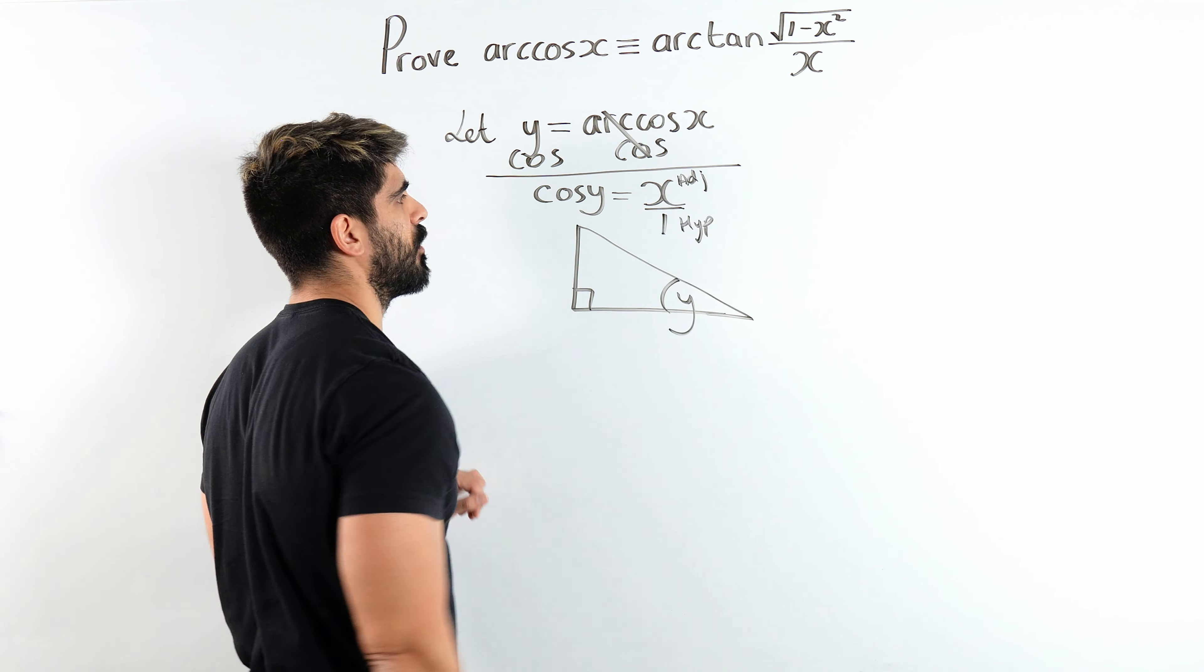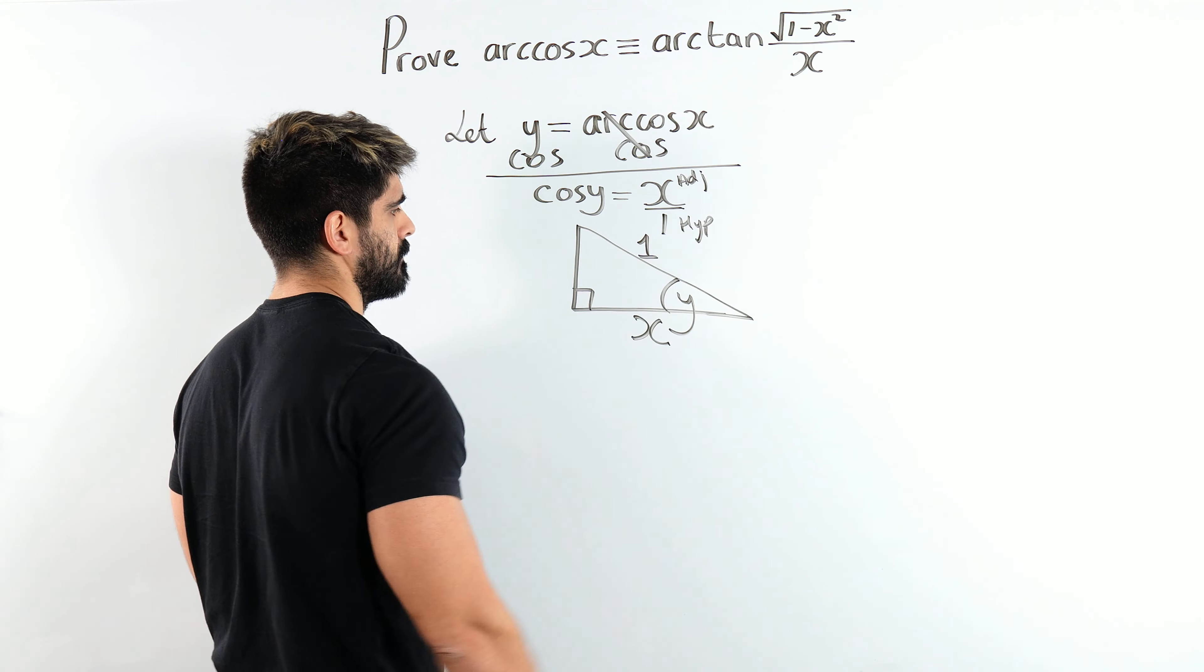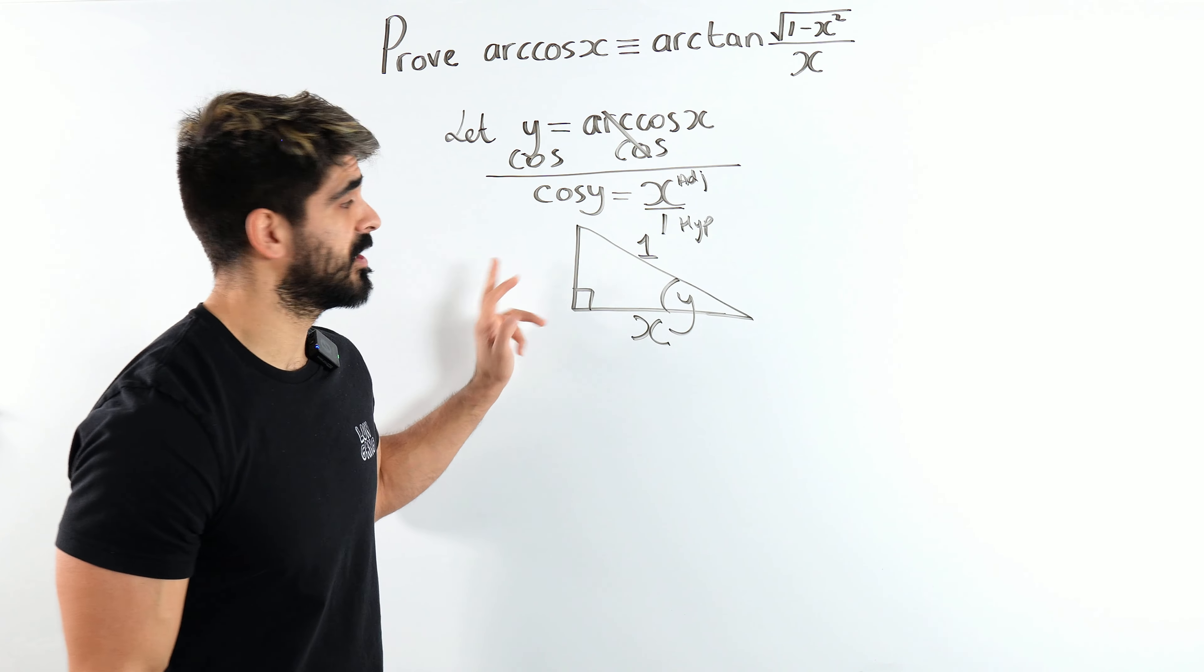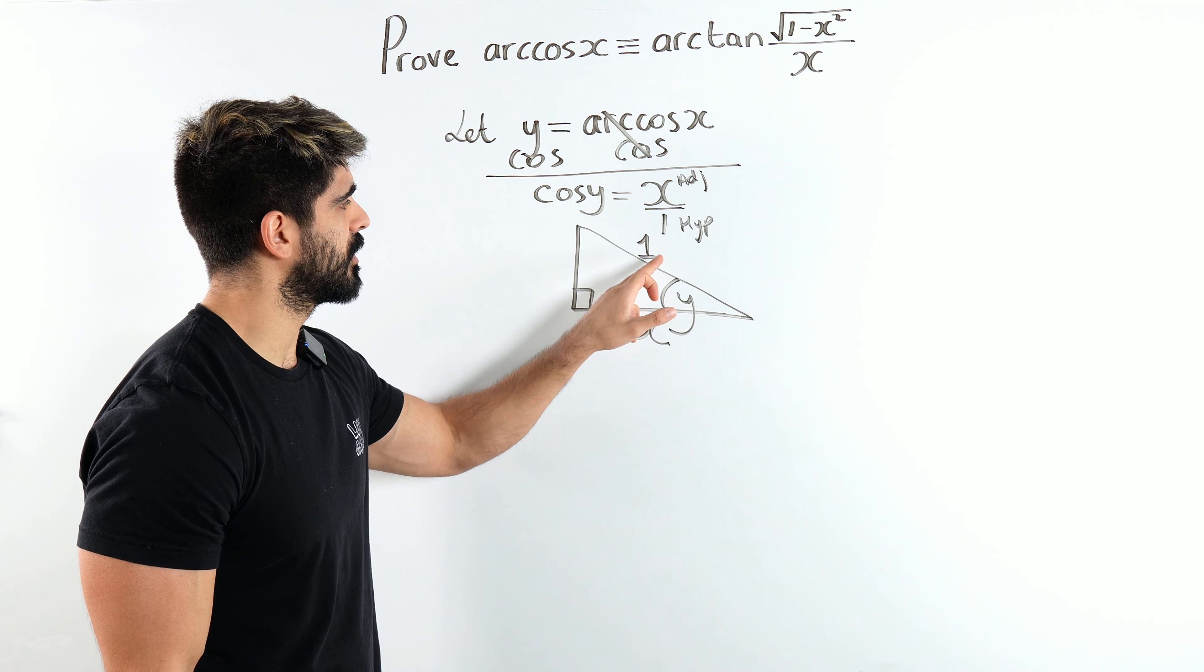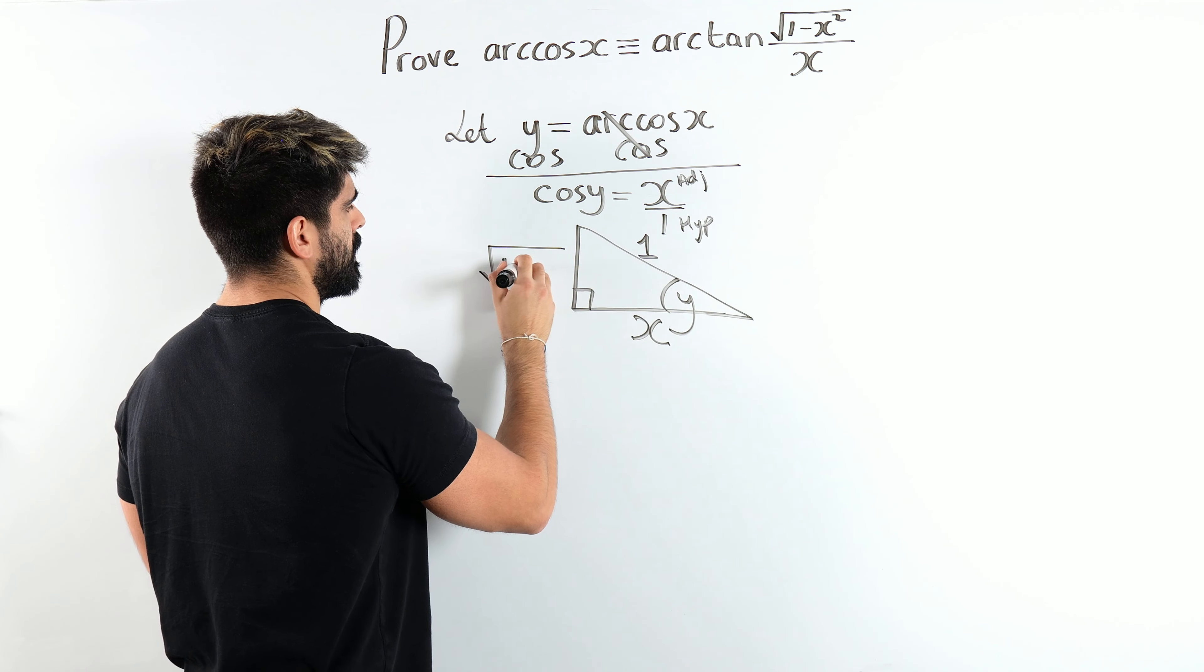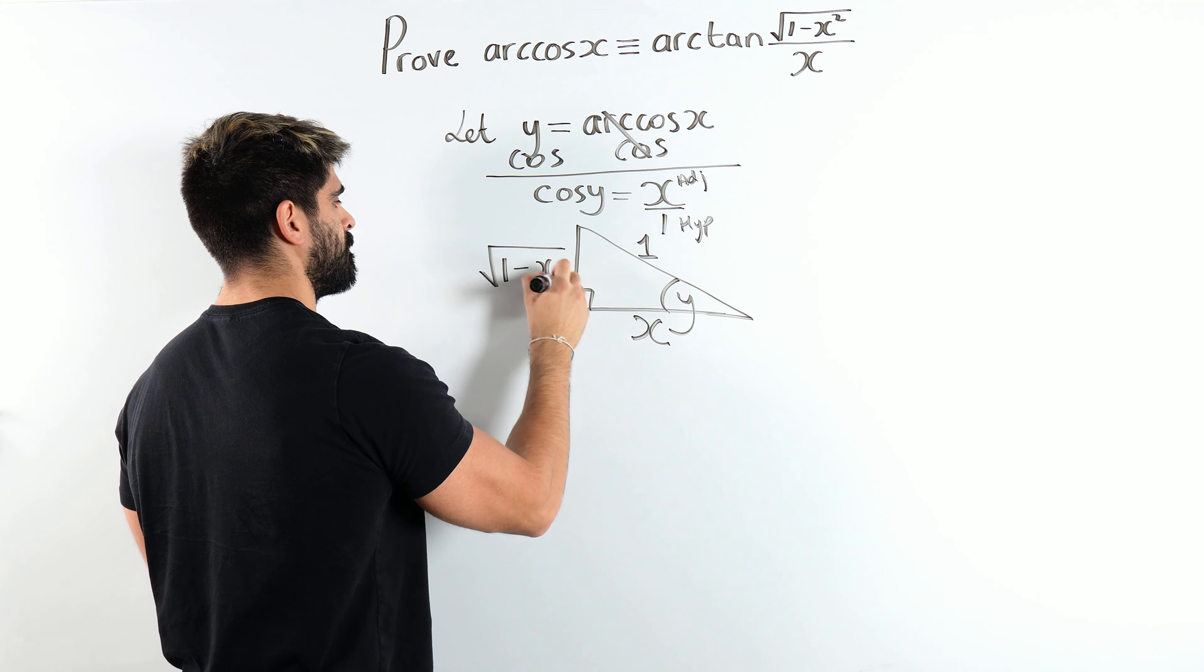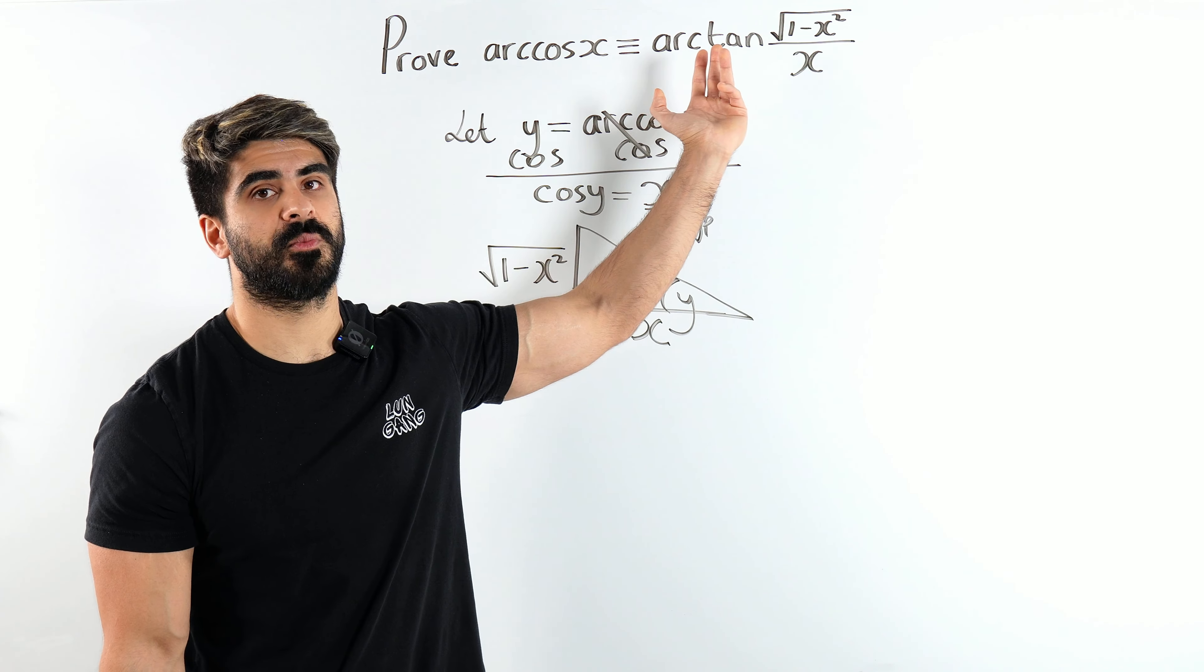So the edge is x and the hyp is 1. We just need to find the missing side of the triangle. So using Pythagoras, we're going to root 1 squared, which is 1 minus x squared.